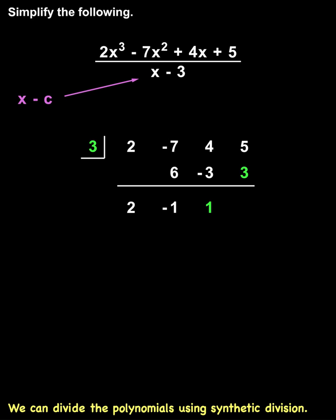Finally, we add 5 plus 3 to get 8. Now, notice that we have a 2, negative 1, 1, and 8 in the bottom row of our synthetic division. These values will give us our answer.